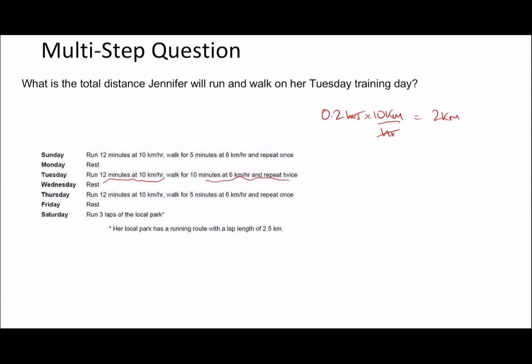So 0.2 hours times 10 kilometers per hour is going to be 2 kilometers. And then walking for 10 minutes at 6. So 10 minutes is a sixth, times 6 kilometers per hour is simply going to be 1 kilometer. Add these two together, get 3 kilometers. However, it says you repeat this twice. So you times it by 2, so you get 6 kilometers. So a little bit nicer of a multi-step question, but nonetheless follow the information.